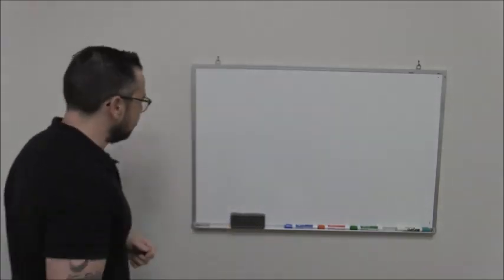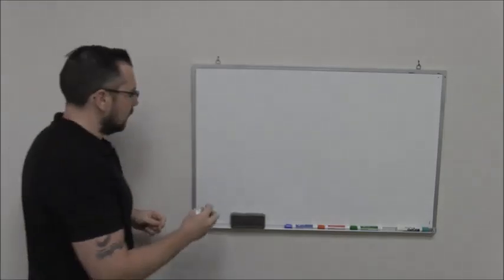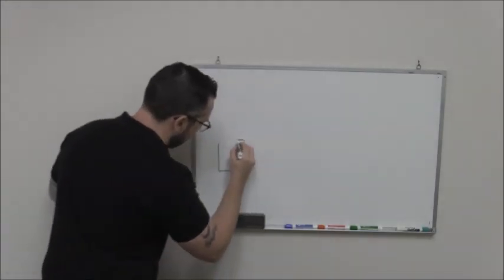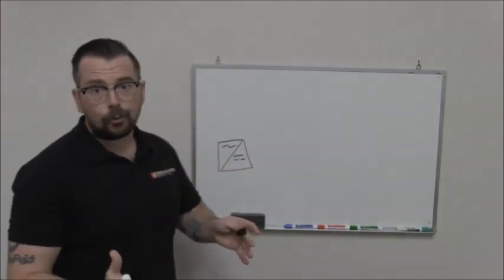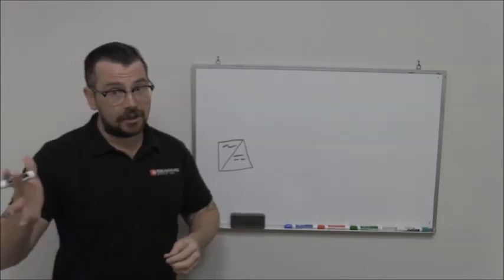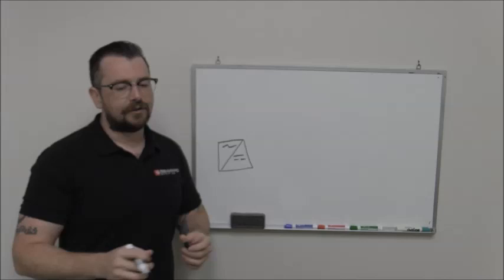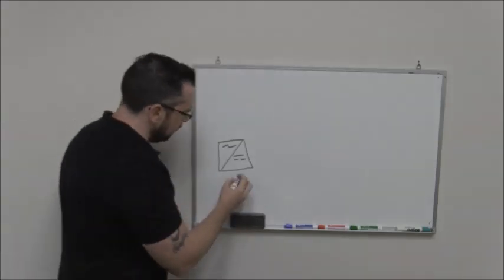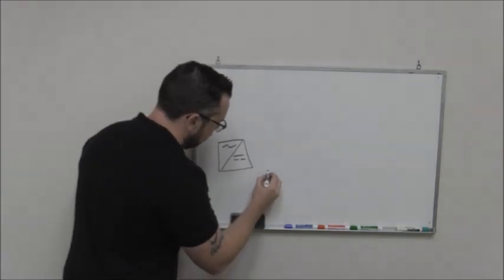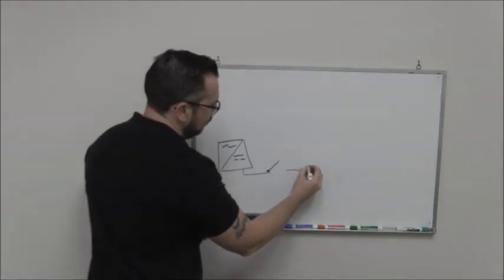So first of all, if we look at the typical layout of a PV array, we can apply this to residential, commercial, even utility-scale plants. First we're going to have an inverter somewhere, and then from the inverter we're either going to have maybe, in Europe we call them a DC isolator, here in the States it's a DC disconnect. That might be underneath the inverter or to the side, and then also we may have a junction box.